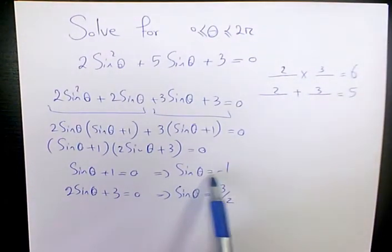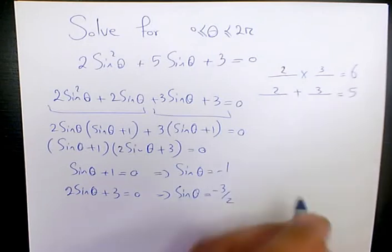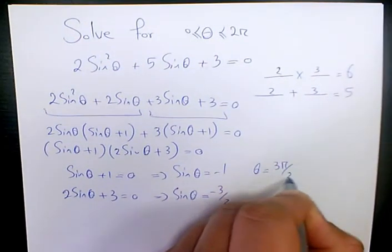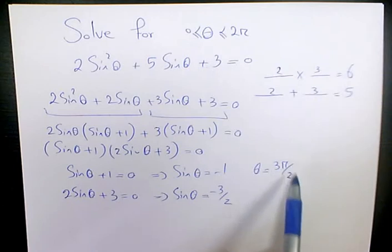For these two cases, the first one sine theta equals negative 1, so theta is going to be 3 pi over 2. We know sine of 3 pi over 2 is negative 1.